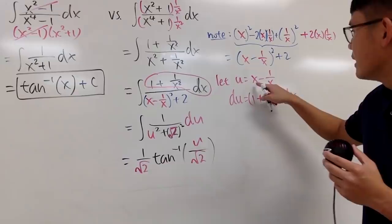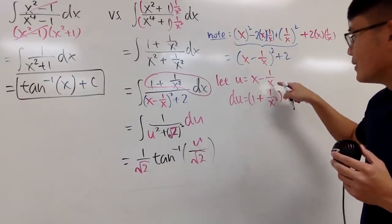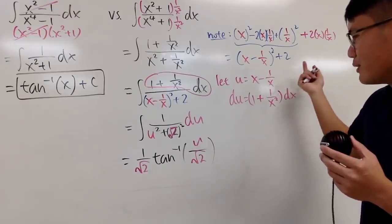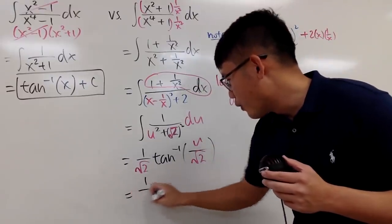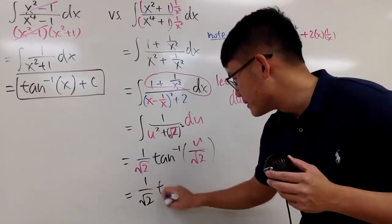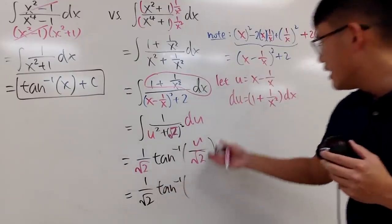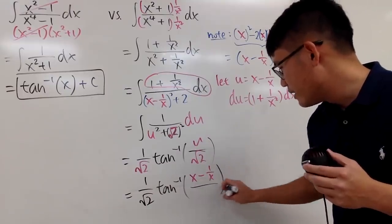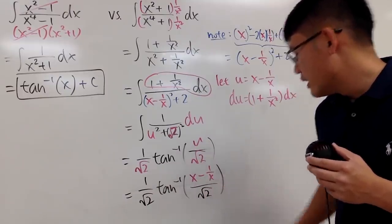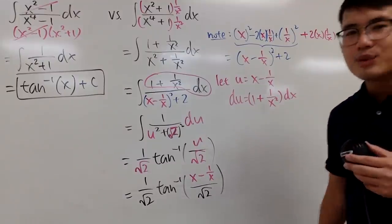What's u? u is x - 1/x, so that's pretty much it. I'll just put this back. We get 1/√2 times arctan((x - 1/x)/√2). Yes, we have some complex fractions.